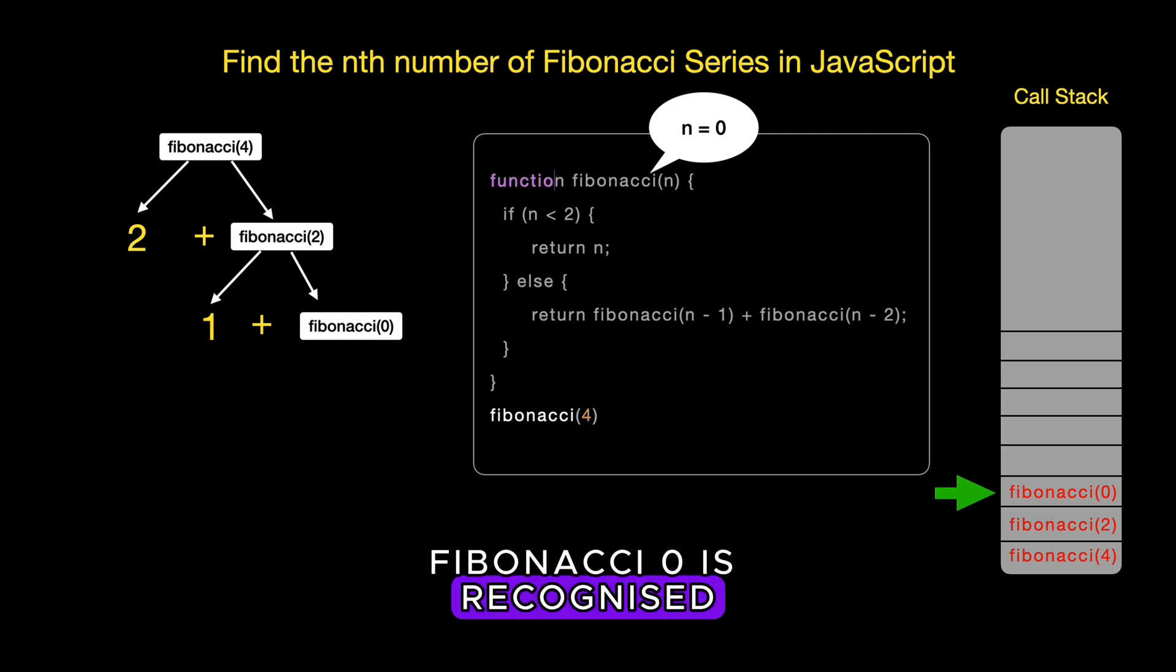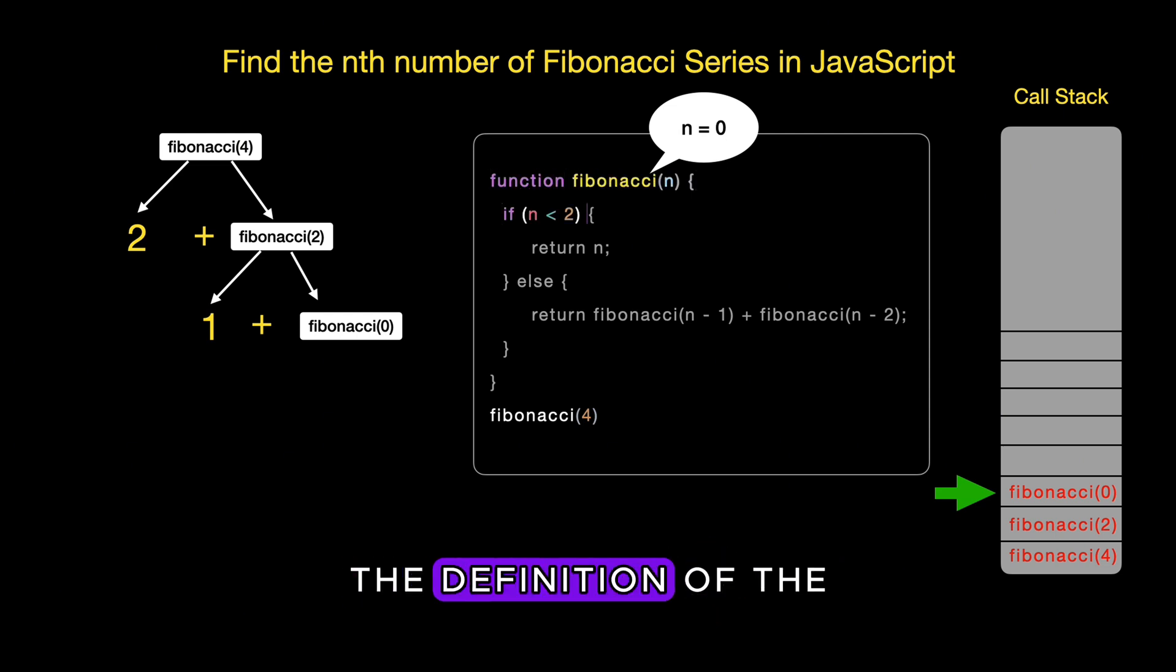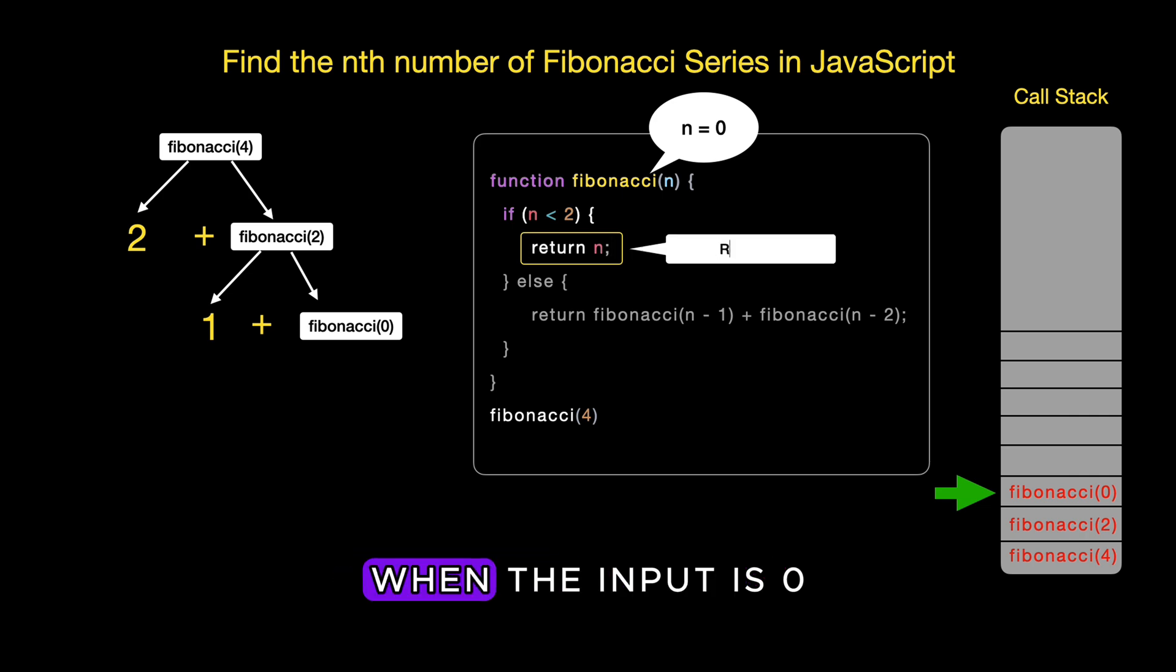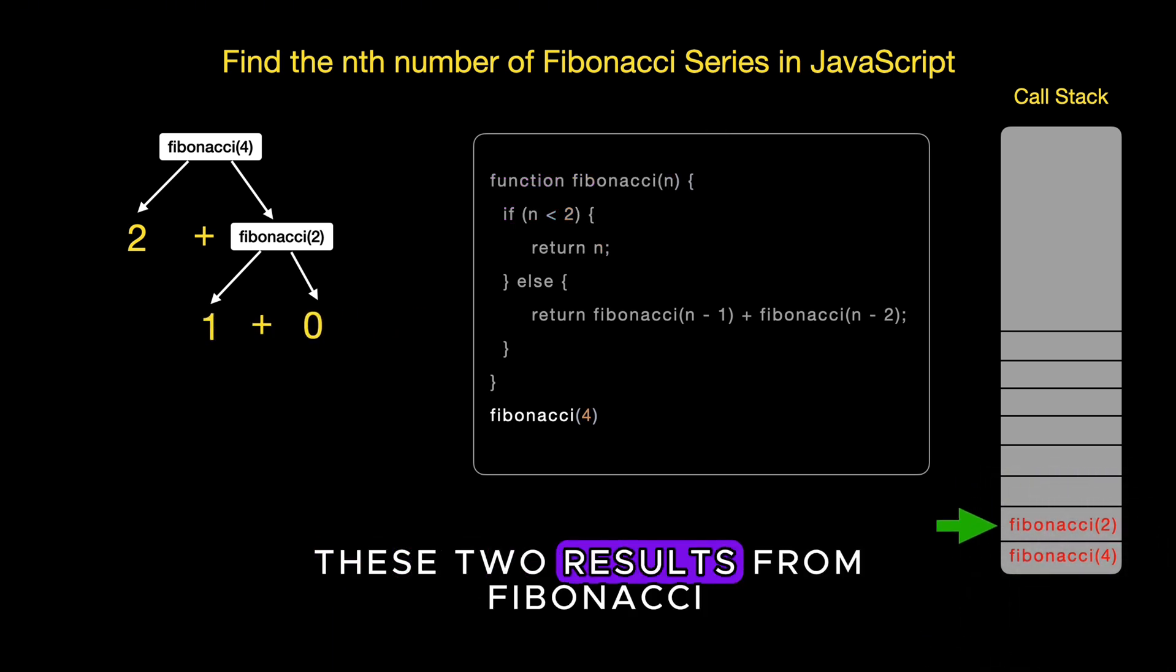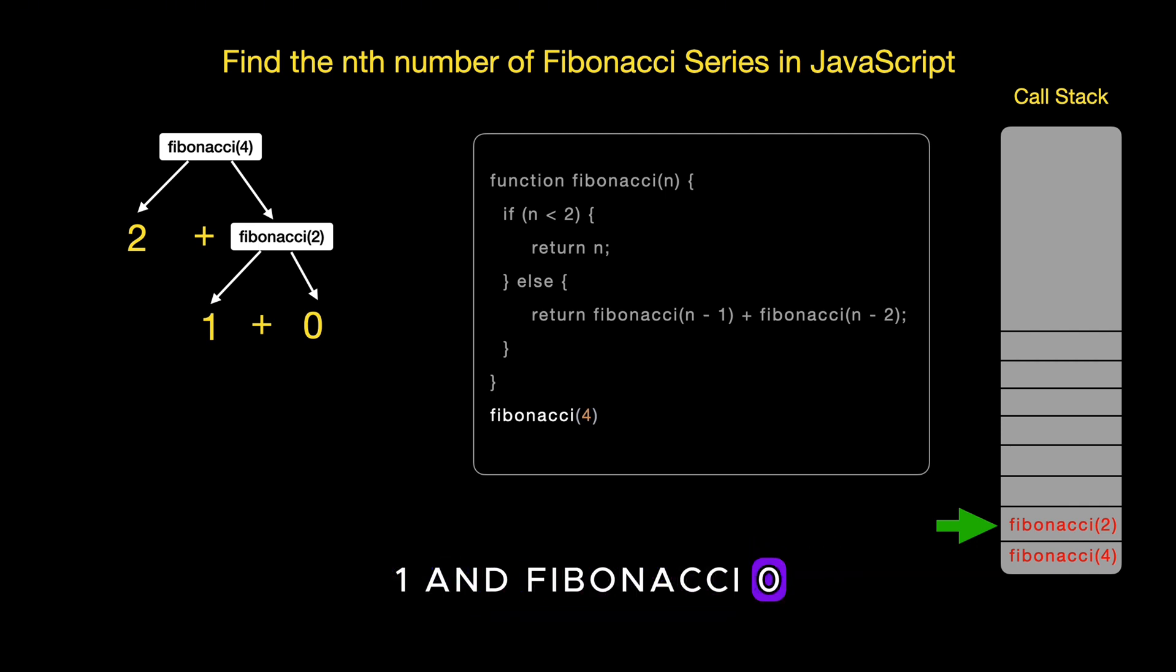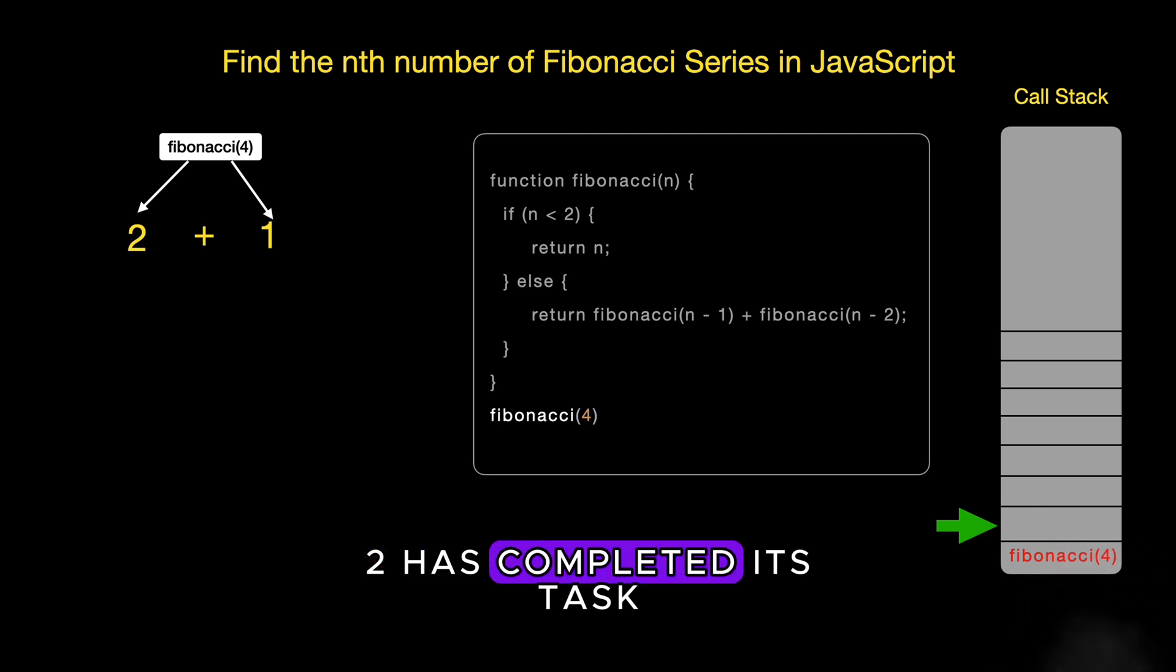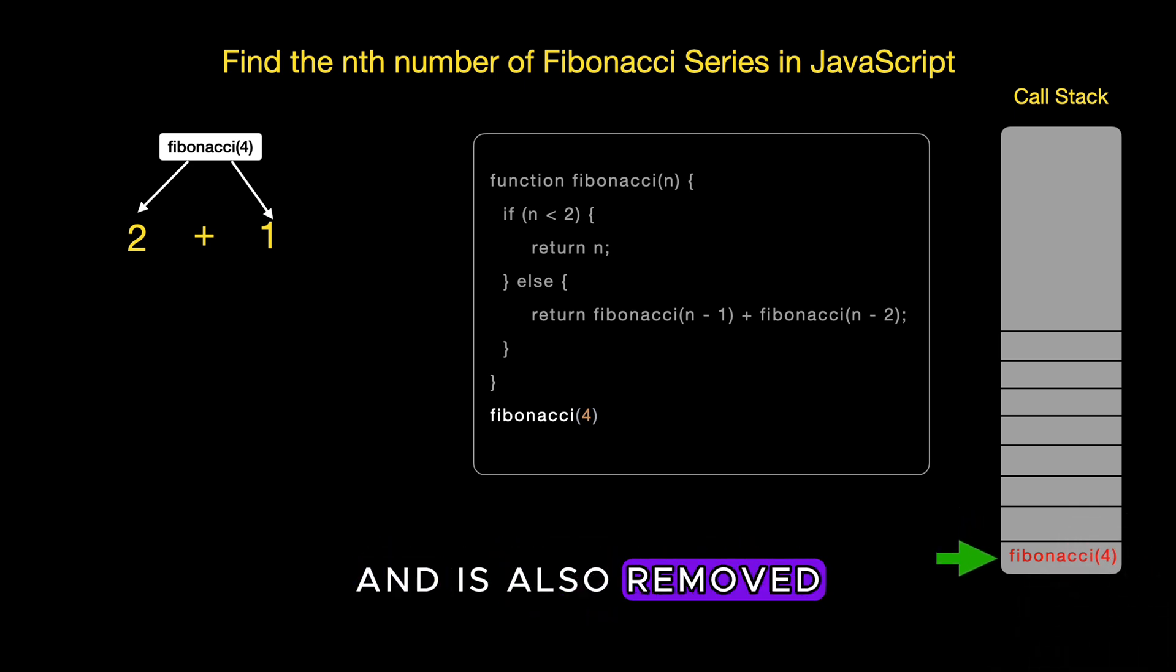Fibonacci 0 is recognized as a base case within the definition of the Fibonacci sequence. According to the base case conditions, when the input is 0, the function returns 0 without the need for further recursion. These two results from Fibonacci 1 and Fibonacci 0 are then added together to give us the final value for Fibonacci 2, which equals 1. With this result, the call to Fibonacci 2 has completed its task and is also removed from the call stack.